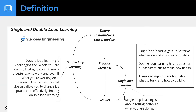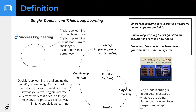Double loop learning challenges what you're doing and why you're doing it — is there a better way? Triple loop learning comes from 'How Buildings Learn.' Chris Argyris is the one who came up with double loop learning. The best description: single loop is creating habits and getting better at them, double loop has us question our assumptions to make new habits.